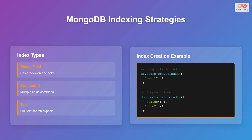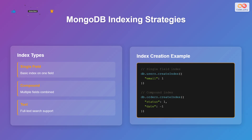Next, let's explore indexing strategies in MongoDB. MongoDB supports various types of indexes to optimize query performance. Single-field indexes are used for basic queries on a single field. Compound indexes combine multiple fields, which are useful for queries that involve multiple criteria. Text indexes support full-text search. Let us see an example of how to create them.